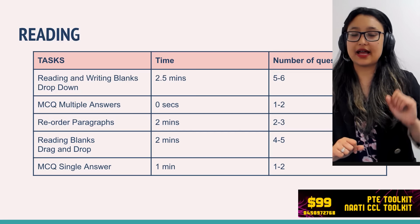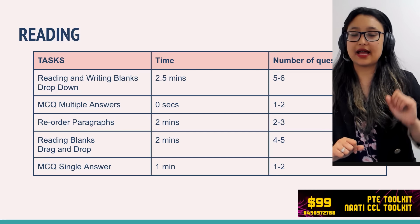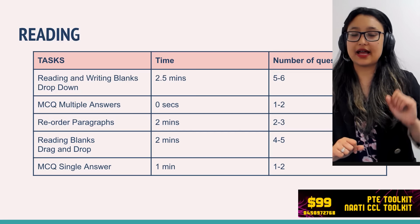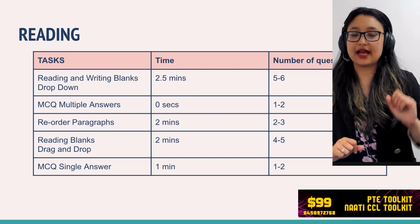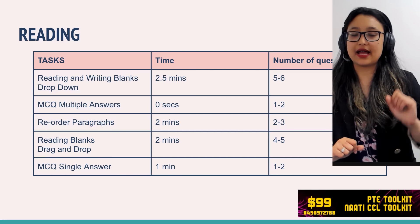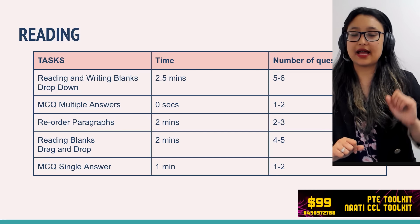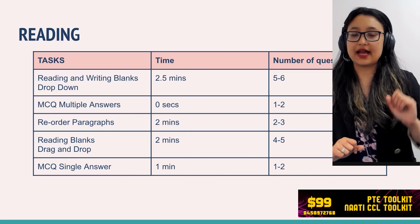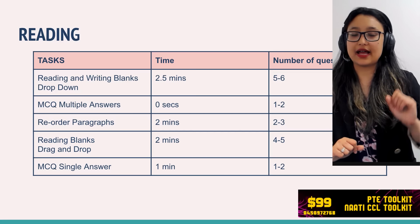Choose one tutor, one path, and start your journey. For summarize written text: 10 minutes each, one to two questions, word count is 5 to 75 words — don't write more than 75, but even 15 to 20 words is fine. For the essay: 20 minutes, one to two questions, word count 200 to 300 words. Submit your answer within the time limit.